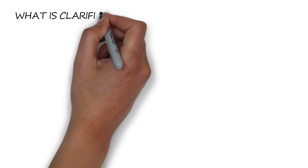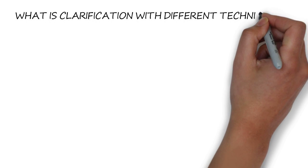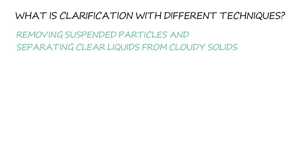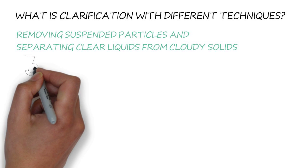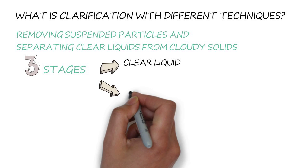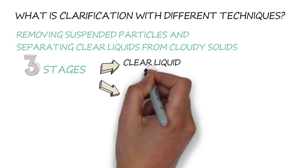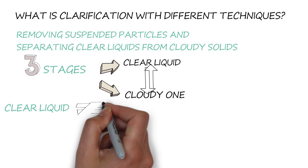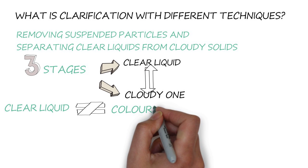Clarification is a method of removing suspended particles and separating clear liquids from cloudy solids. Clarity of liquid can appear in three different stages: clear liquid, cloudy one, and something in between. The result of clarifying liquid is clear liquid, although that doesn't mean colorless.